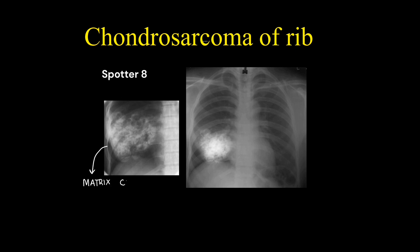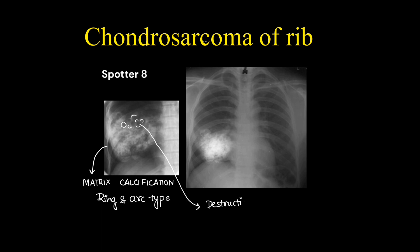This is a case of chondrosarcoma of the rib, where there is matrix calcification classically seen as ring and arc type. There is destruction of the affected rib because of a permeative pattern of growth.